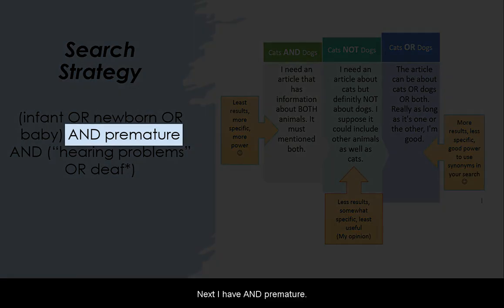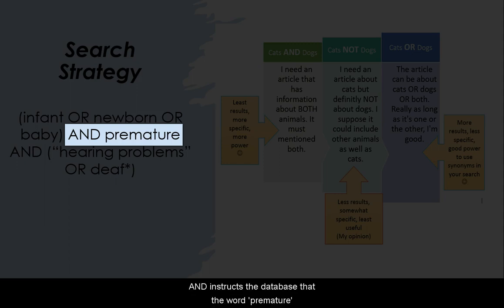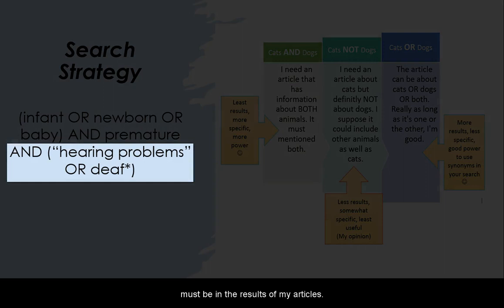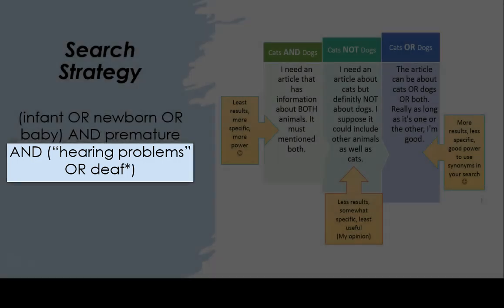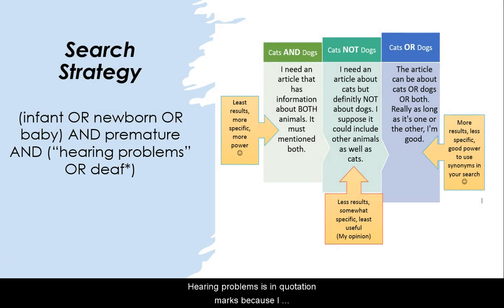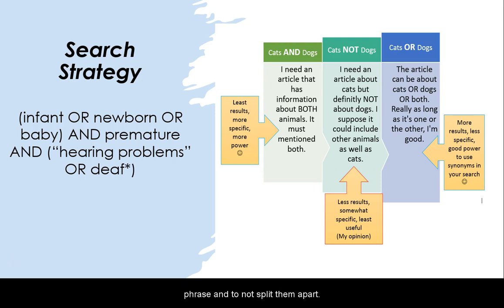Next, I have AND premature. 'AND' instructs the database that the word 'premature' must be in the results of my articles. The last portion is: AND ("hearing problems" OR deaf*). 'Hearing problems' and 'deaf' are synonyms, so they are OR'd together. 'Hearing problems' is in quotation marks because I want the database to keep these words together as a phrase and not split them apart.